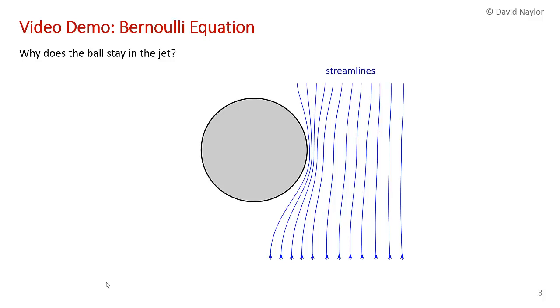And so, the question is, why does the beach ball stay in the air jet? You can see it oscillating around, and whenever it goes to move out of the air jet, it gets sucked back in. What's the explanation for this phenomenon?